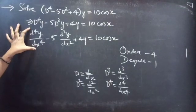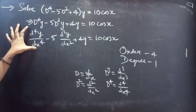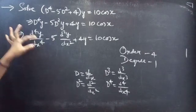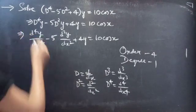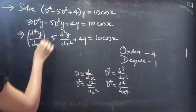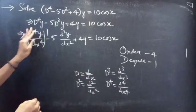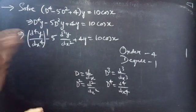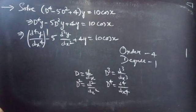Here, d⁴y/dx⁴ is the highest derivative, so our order will be 4. The highest power of the highest derivative is the degree, which is 1. Now, coming to the problem.